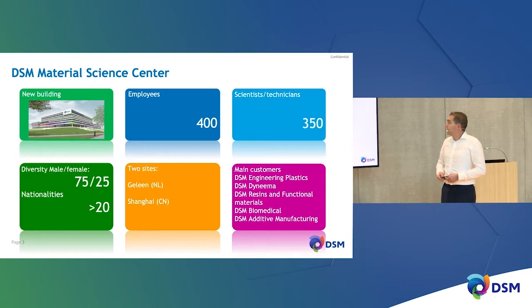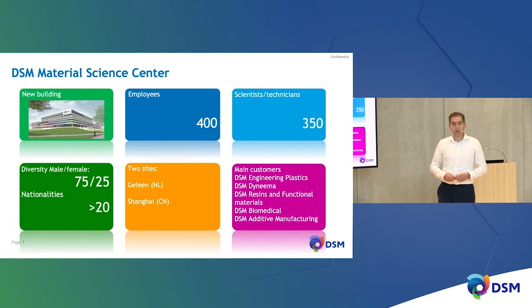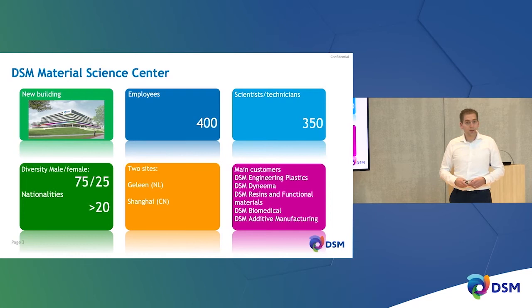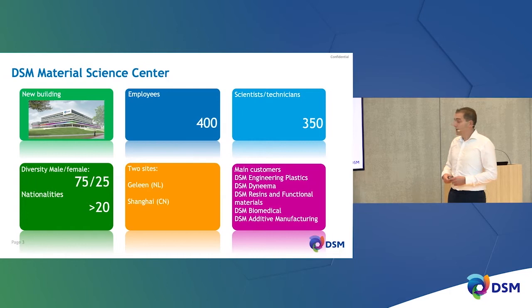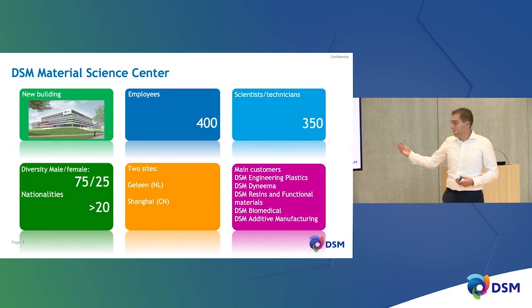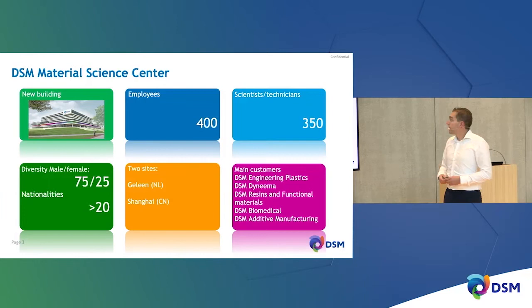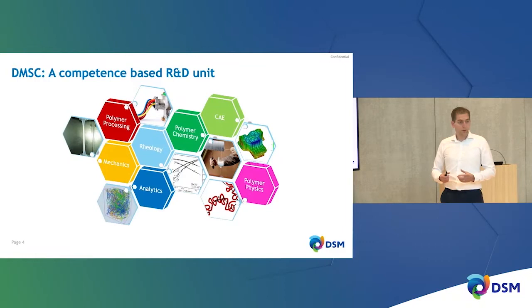DSM has a corporate R&D entity called the DSM Material Science Center, with approximately 400 employees of which 350 are scientists or technicians, all with dedicated expertise. We are quite diverse and based on two sites — the majority of people are in Geleen and we have a smaller department in Shanghai. Our main customers are the different business groups within DSM: DSM Engineering Plastics, DSM Dyneema, Resins & Functional Materials, Biomedical, and Additive Manufacturing.